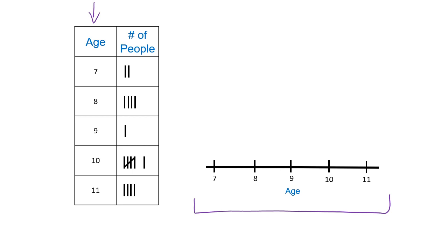In the first column, you have the ages 7, 8, 9, 10, and 11. On the right in tally marks, you have the number of people that are that age. So I'm going to show you how to build a line plot using the information from your tally table. I started off with seven and I locate the number seven on my line plot. Since there are two children who are seven years old, I'm going to make two X's. Each X represents one person, and I do the X's vertically, one on top of the other.